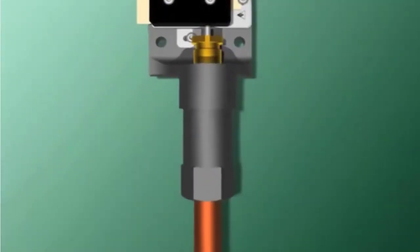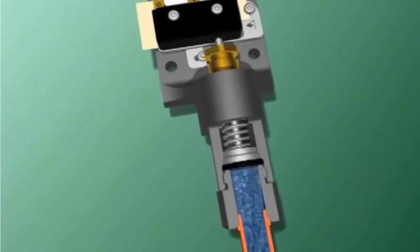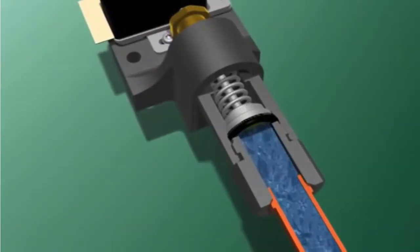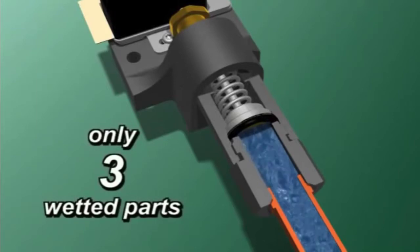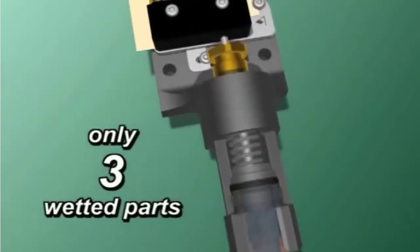The process material only comes in contact with the process connection, the O-ring, and one side of the diaphragm. That's what we mean when we say SOR switches have only three wetted parts.